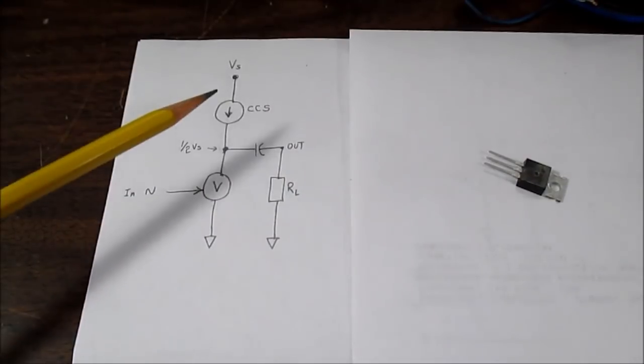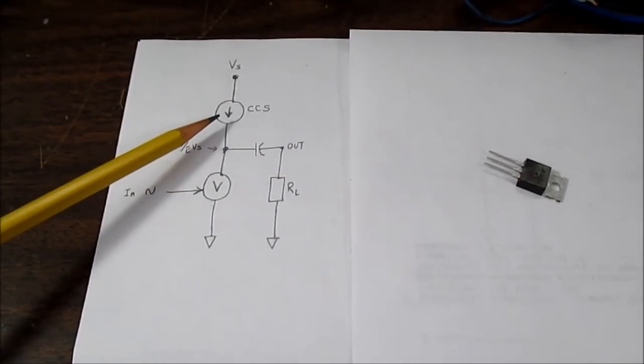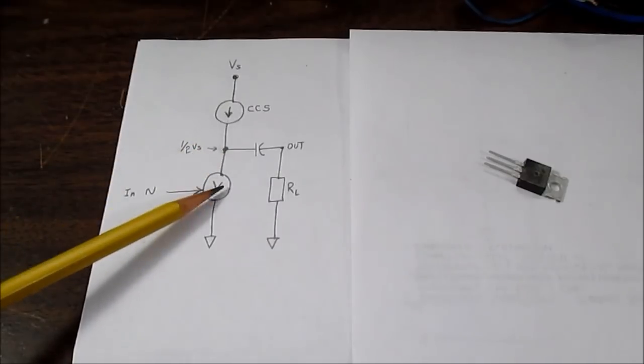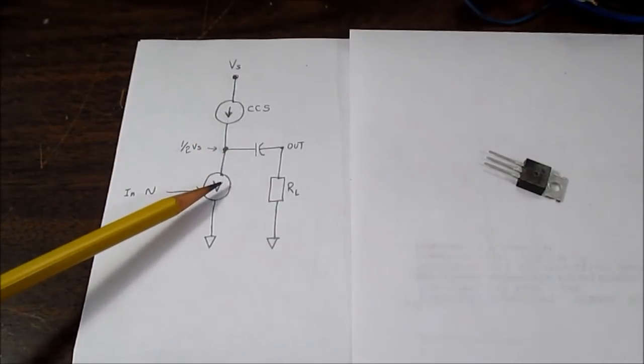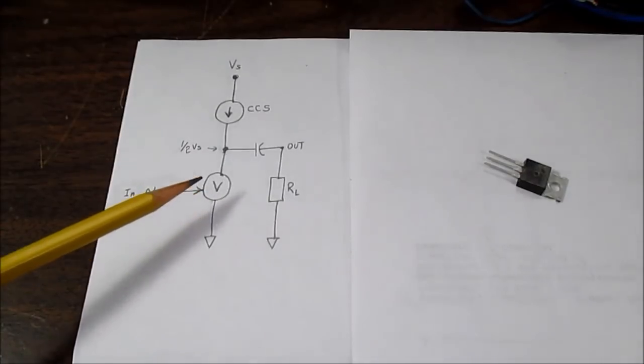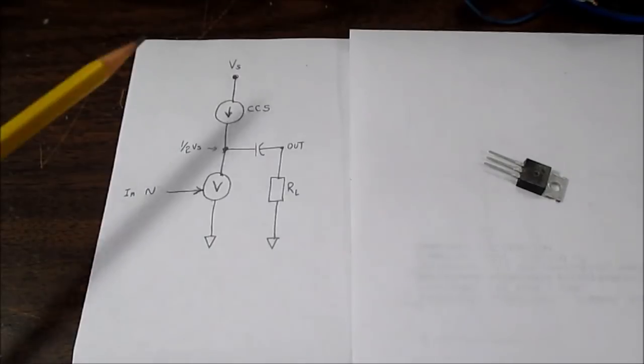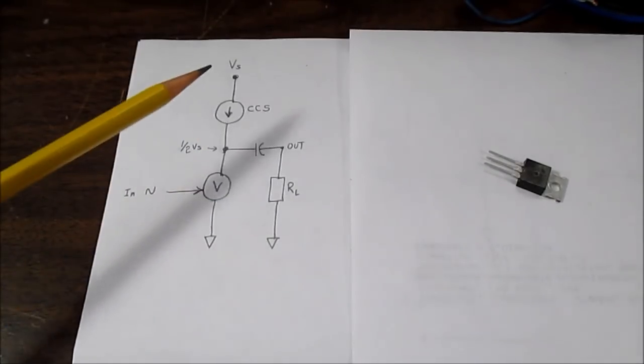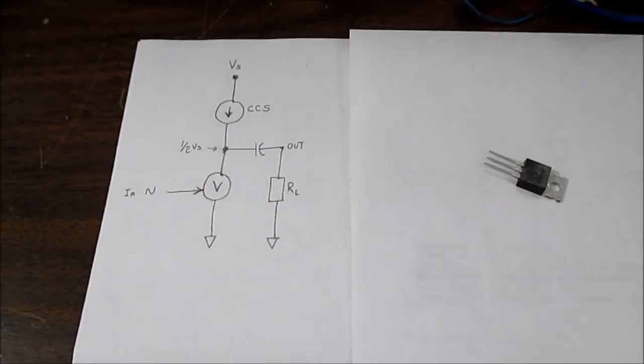Well some people might argue, isn't this just adjusting the voltage to keep the current the same, and this current to keep the voltage the same? Well it's an argument in semantics. It just helps us describe the circuit better the way I have it described here.